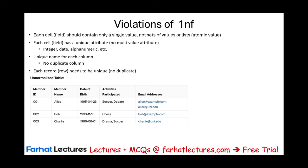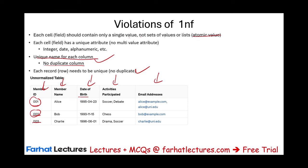Let's take a look at this unnormalized table. We have member ID, member name, date of birth, activities participated, and email address. The first thing we notice: we have no duplicate columns — we don't have member name twice or date of birth twice. That's good, so we can check that box. Each row needs to be unique — member ID 001, 002, 003 — so we've met that condition. Now, each cell should contain only a single value, no sets of values or lists — this is the atomic value condition.